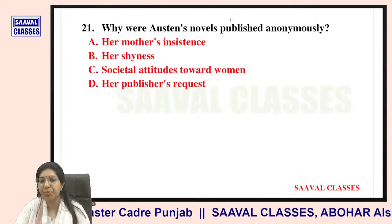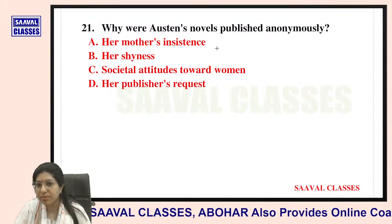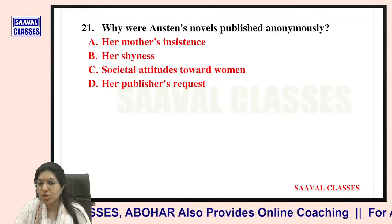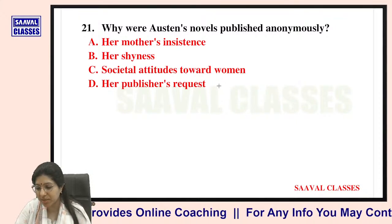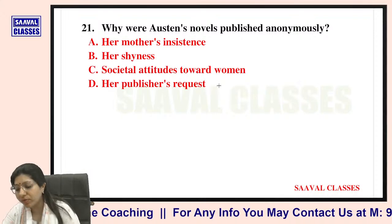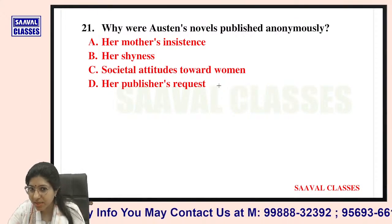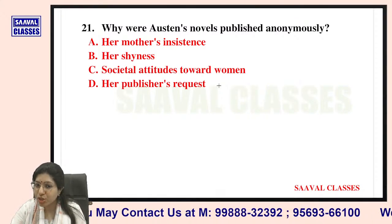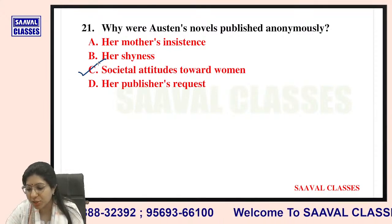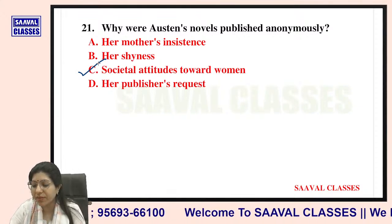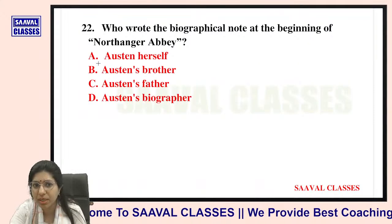Question number twenty-one: Why were Austen's novels published anonymously? Options are her mother's insistence, her shyness, societal attitude towards women, or her publisher's request. The answer is societal attitude towards women — at that time, women were not accepted as writers.